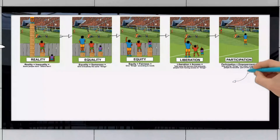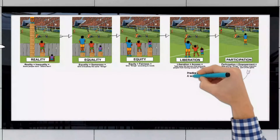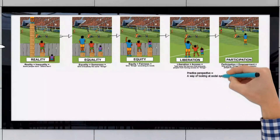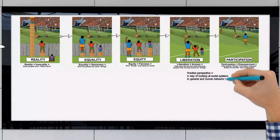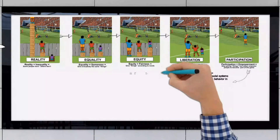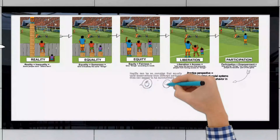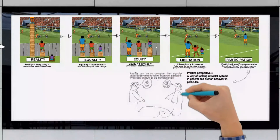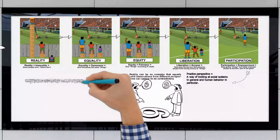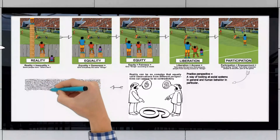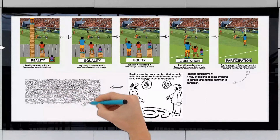It is within the context of these three broad goals that we will next look at practice perspectives. Practice perspectives are basically the way in which social workers look at social systems in general, and human behavior in particular. If you look back at your community of origin, which picture springs to mind? Just think about it for a minute.